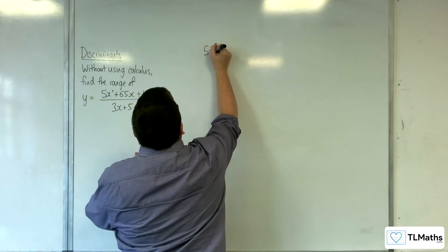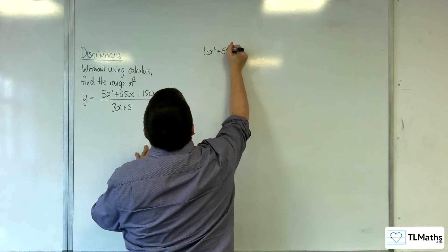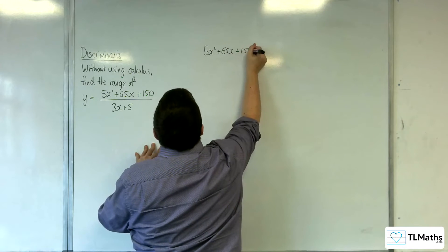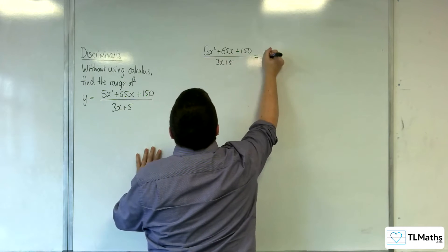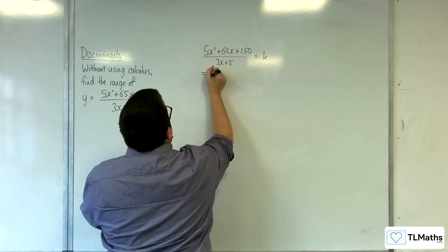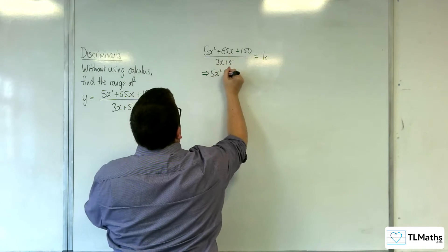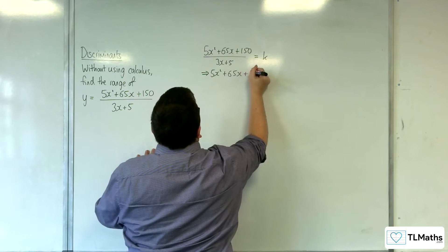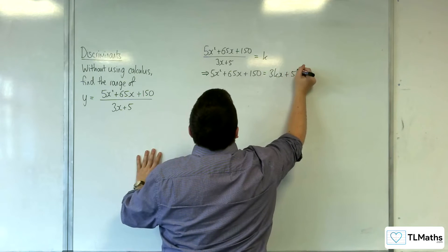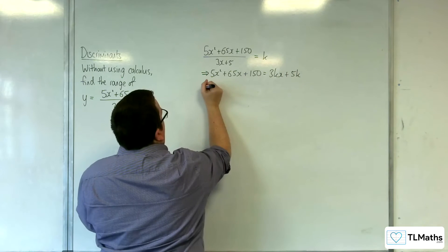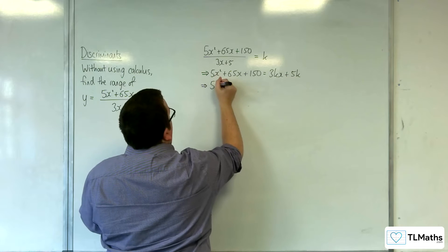So 5x squared plus 65x plus 150 over 3x plus 5, and I'm going to put that equal to k. I'm going to multiply up by the denominator. So 5x squared is 3kx plus 5k, and then I'm going to move everything onto the left-hand side of the equation.